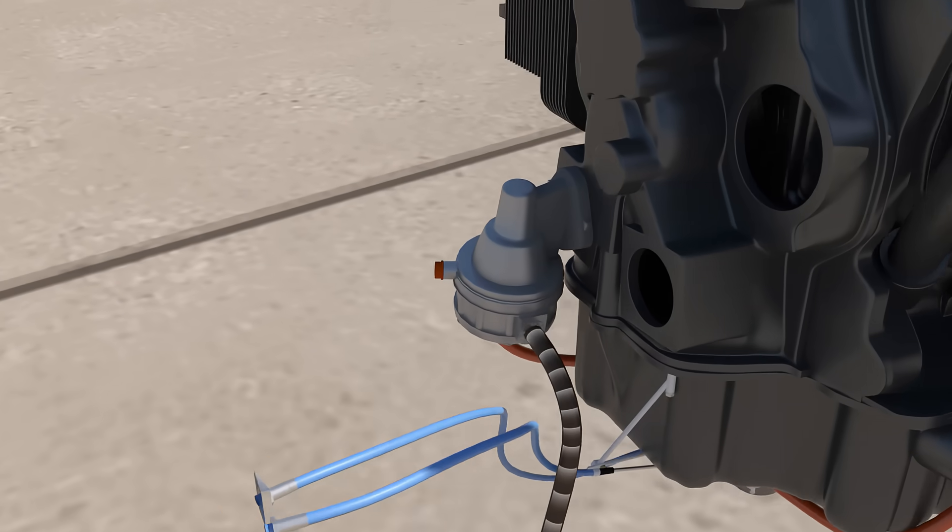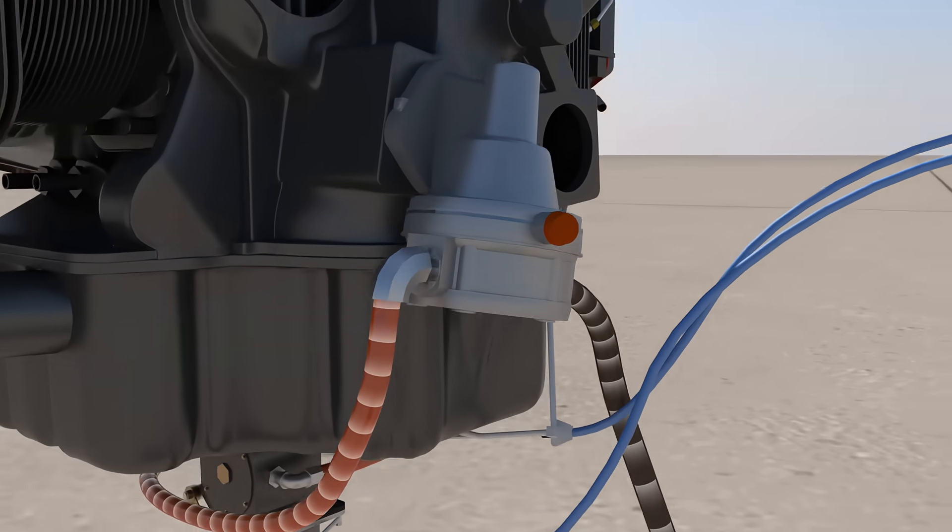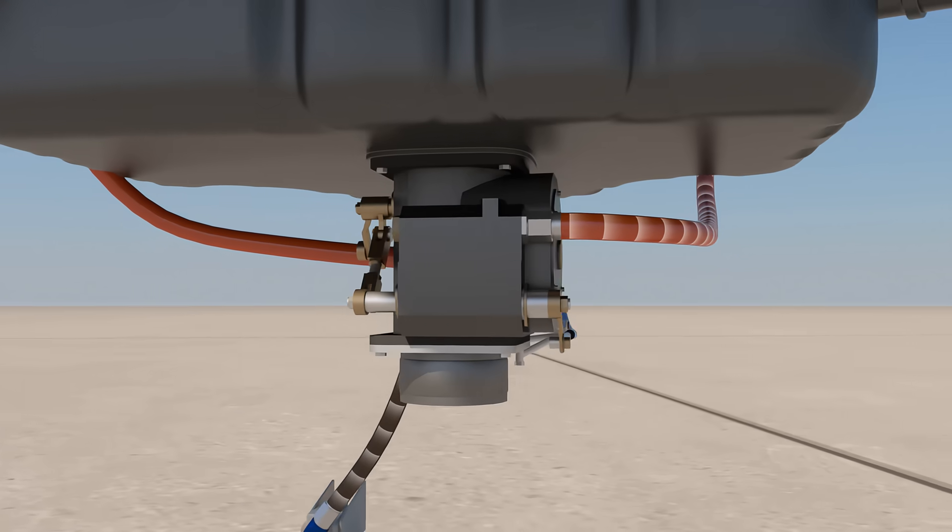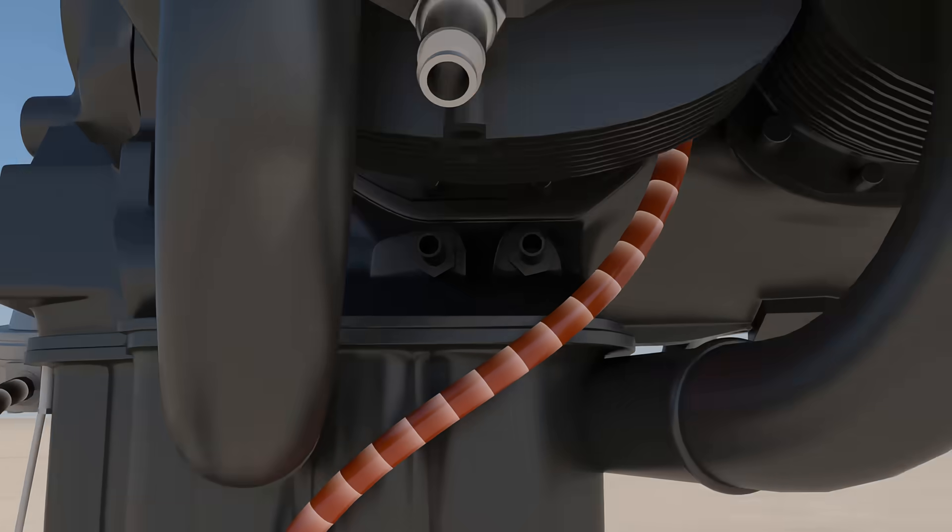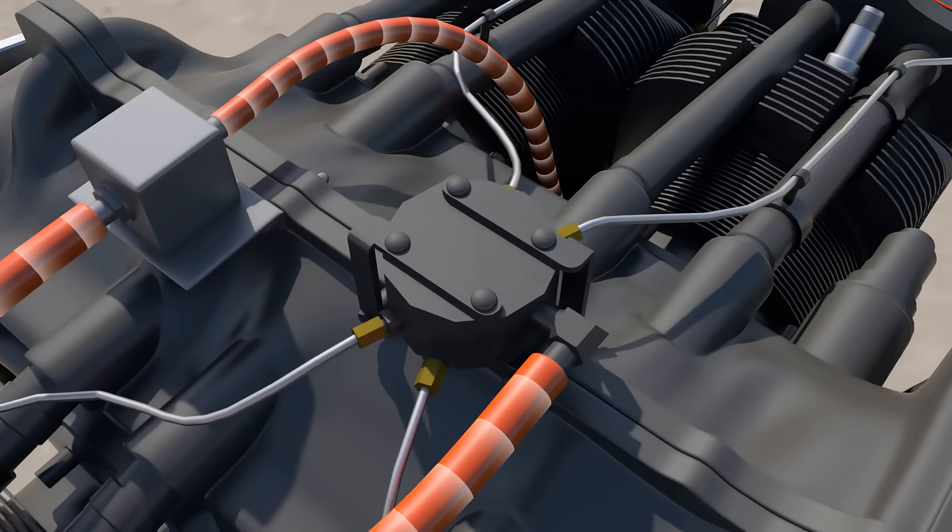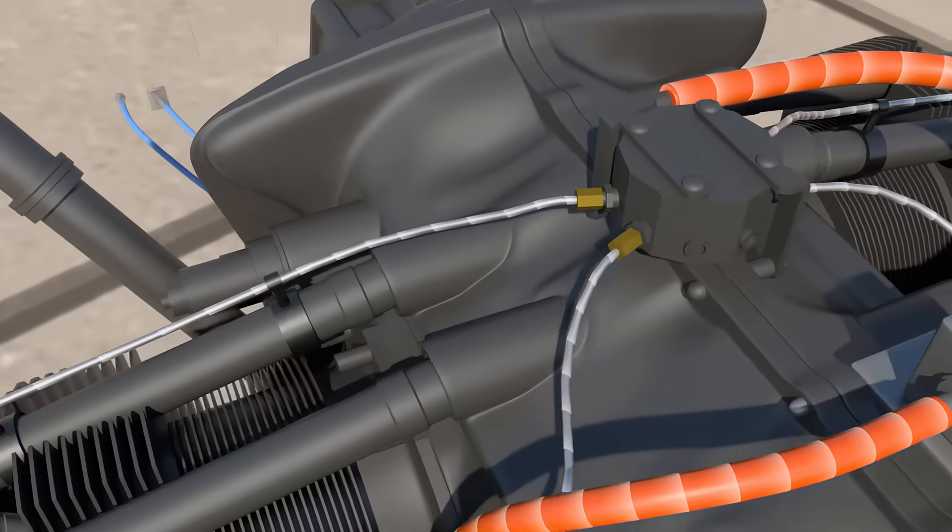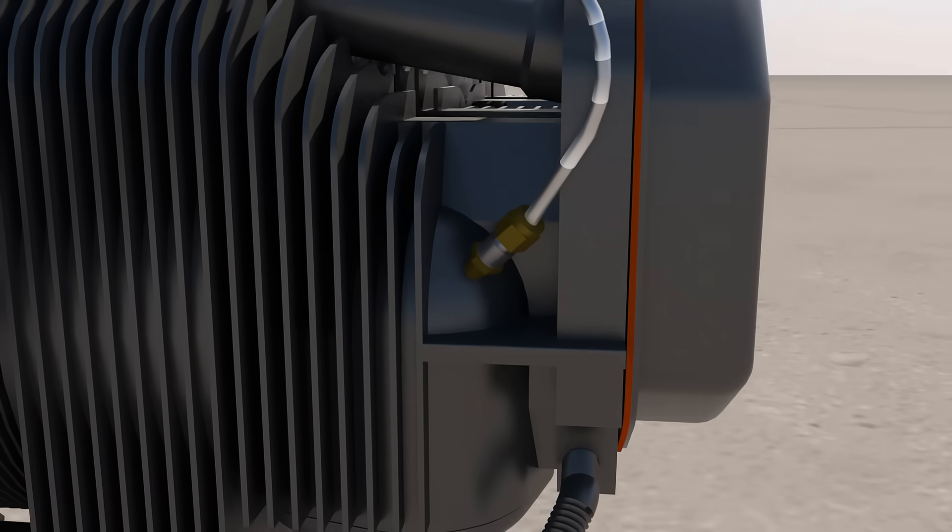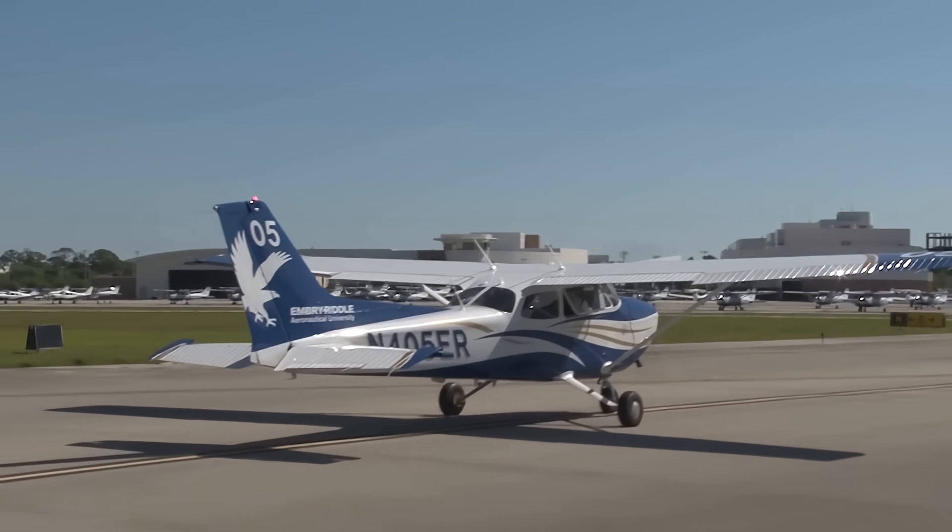The fuel pump pumps fuel from the fuel tanks into the fuel control unit. Then, the fuel control unit regulates the specific amount of fuel needed based on the mixture and throttle settings. The fuel then gets sent to the fuel manifold valve, where it is dispersed and heads to the nozzles of each cylinder. This time, the fuel does not mix with the air until immediately before entering the combustion chamber.